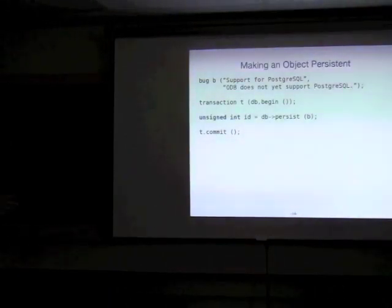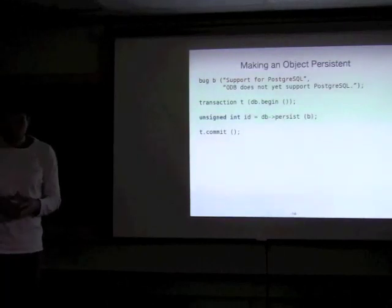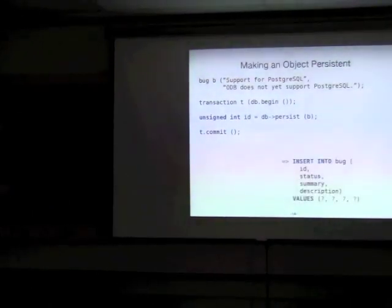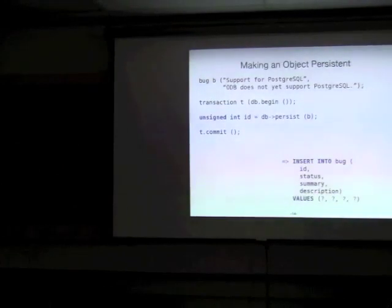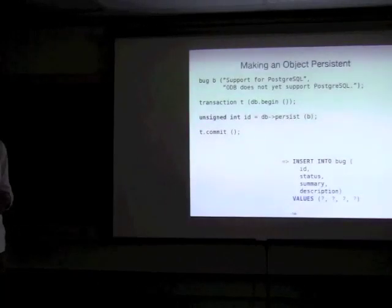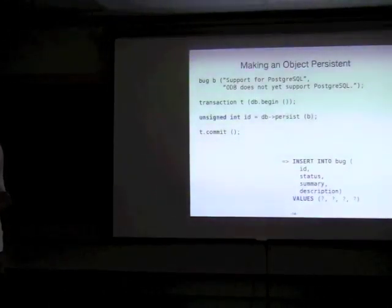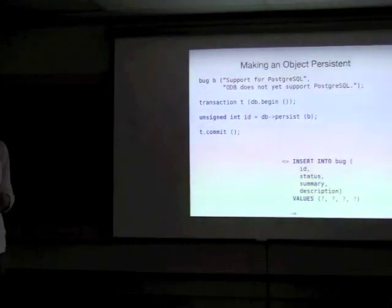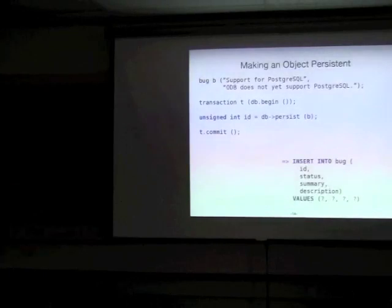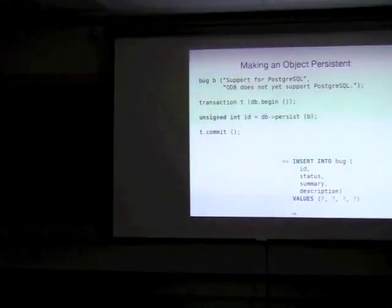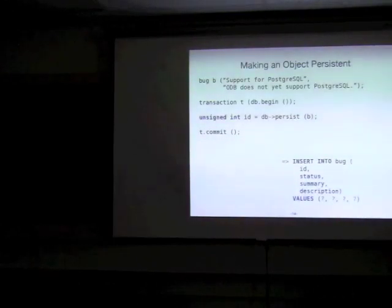So we start the transaction. Every database operation is performed within the transaction. Then we call the persist function, which returns the object ID for the new persistent object. Finally, we commit the transaction to make the changes permanent. For those interested, here is the SQL insert statement that is executed as a result of the persist call. What happens if the commit fails? Do you then throw an exception retry? Exception is thrown and there are certain classes of exceptions which we call recoverable. For example, a connection went bad or timeout happened, which you can detect and retry.